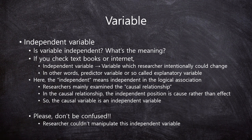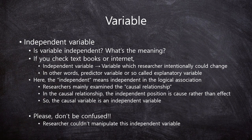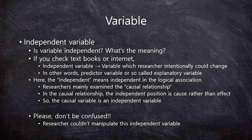First: independent variable. Why is it called independent variable? If you check a textbook or the internet, you can find that an independent variable is a variable which a researcher intentionally could change. In other words, it is called a predictor variable or exploratory variable. The independent means independent in the logical association. Researchers examine causal relationships — cause and effect. In the causal relationship, the independent position is the cause rather than the effect. So the causal variable is the independent variable.